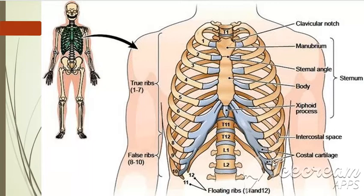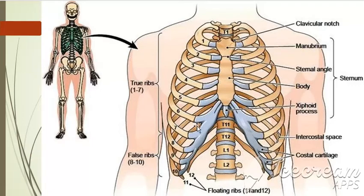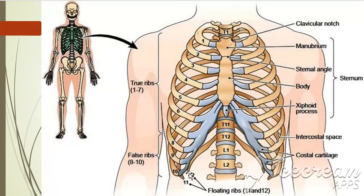The 11th rib is longer than the 12th rib. Both of them are confined to the back and are not seen from the front. Ribs 1 to 7 are true ribs because they are directly connected with the sternum. Ribs 8, 9, and 10 are known as false ribs because they are indirectly joined with the sternum through the costal cartilage.